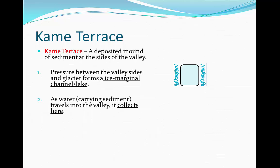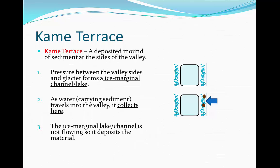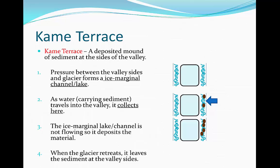As water, which carries sediment, travels into the valley — perhaps from a hanging valley — it collects in this ice marginal channel. We see the sediment going into the channel, which falls from the valley. As an ice marginal lake or channel is not flowing, it deposits all of its material at the bottom on the valley side when the glacier retreats. As it does so, it leaves the sediment at the valley sides, and we get a kame terrace.